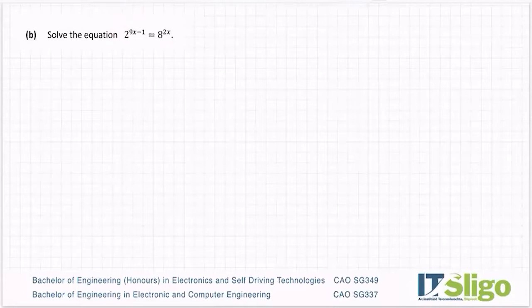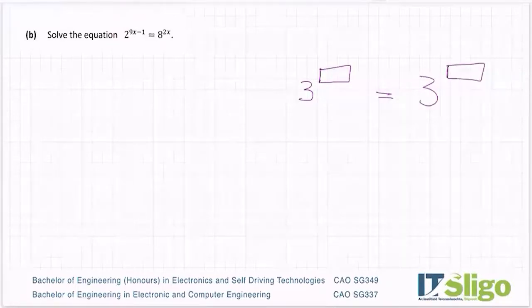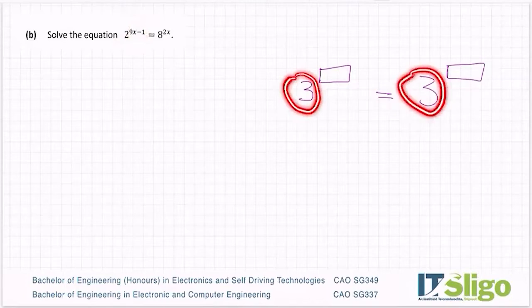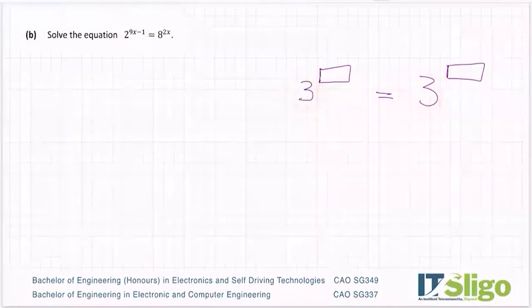So the theory behind this is as follows. If I have a base number and I'm going to use the base number 3. And if I have 3 to the power of something and I have equals 3 to the power of something. When are those two numbers equal? Well, the only time those two numbers can be equal is if their powers are also equal. So let me say that again. If the base number, this is called the base number of an indices and the top thing is called the power.